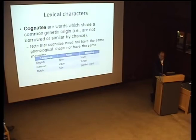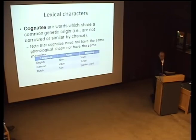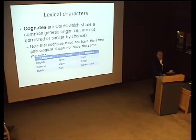What are lexical characters? When we look at lexical characters, we're looking at cognates. Cognates are words that share a common genetic origin — that means they're not borrowed, and they're not similar just by chance. Words can be very similar by chance; a lovely example is English 'mess' and Kaqchikel Mayan 'mess,' both meaning exactly the same thing and pronounced in exactly the same way, but they're just not related.